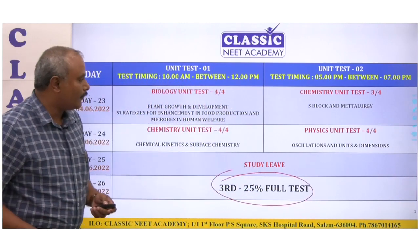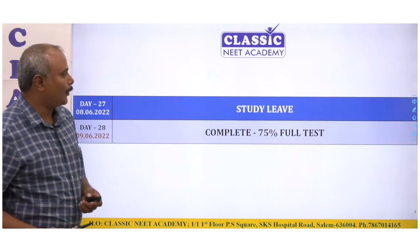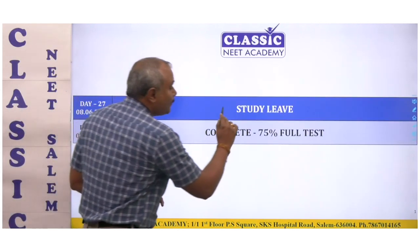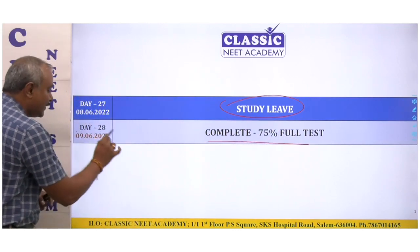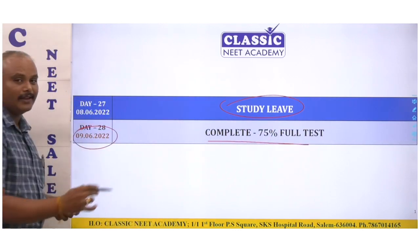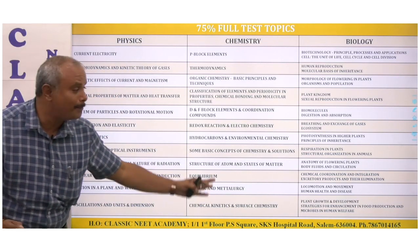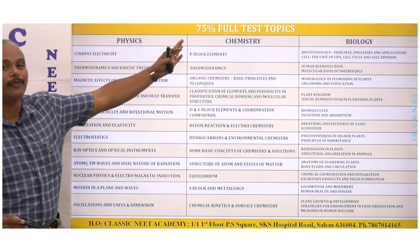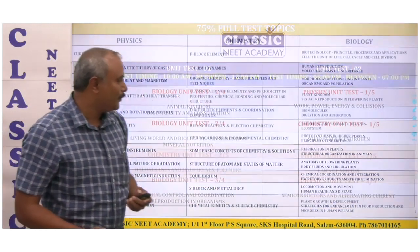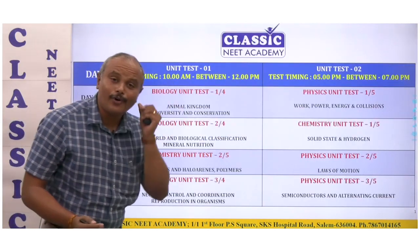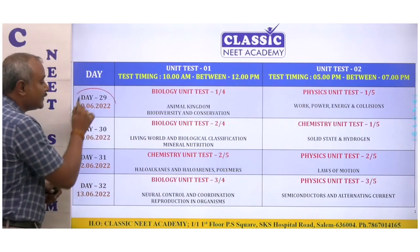There will be the third 25% full test covering that portion's syllabus. After that, when you have completed the full test, you get a complete 75% full test on 9.6. Then the fourth 25% full test starts on 10.6, covering the complete 75% syllabus of NEET.